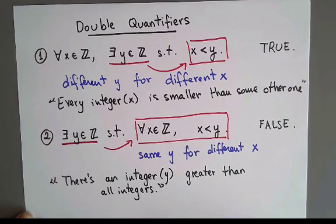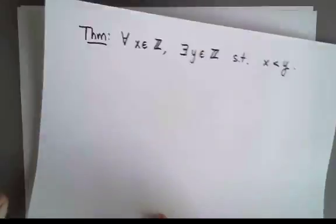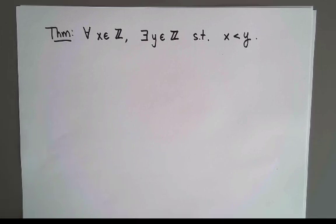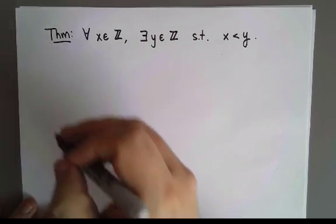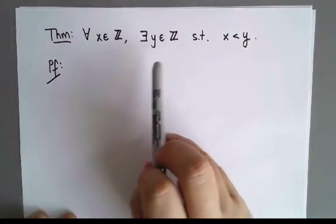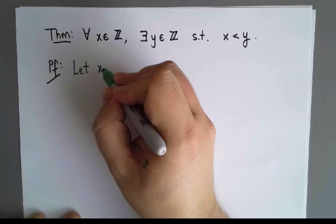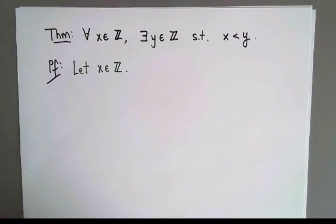We know the first is true and the second is false, and since they're mathematical statements we should also be able to write formal proofs. Here's the first statement written as a theorem. This leads by saying 'for every integer x' this is true, so I must check it for every integer x. Since there are infinitely many values of x, I cannot check them all one by one, so I'm going to check them all at once. I'll begin the proof by saying: let x be an integer. This means I'm not choosing x — x can be anything — and I'm going to write a proof that works for all x's at once.